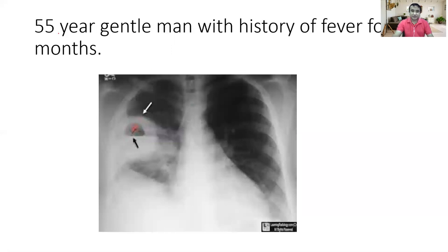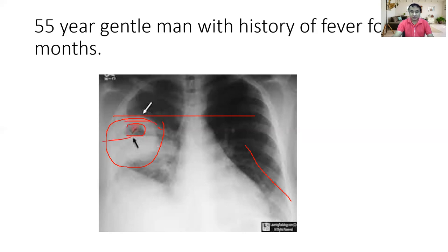Similarly, there is a 55-year-old gentleman with fever for two months duration. After looking at the technicalities, the upper zone seems normal, but in the middle and lower zone on the right side, there is an opacity with a radiolucent area — a definite air-fluid level within the opacity. This chest X-ray is consistent with a lung abscess, where we see this type of air-fluid level within an opacity.